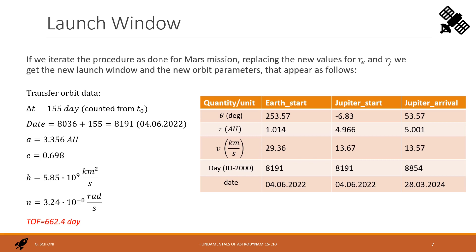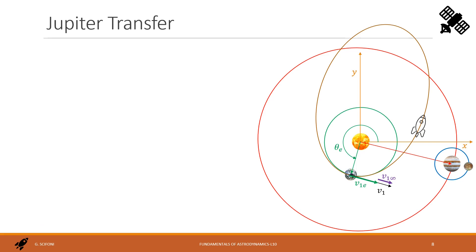The remaining parameters of the planets are in the table. An important notice is that the arrival position is still the theoretical one, considering a launch up to Jupiter's center. Actually, the encounter position will be something before, due to the influence of Jupiter's gravity. We'll see it later.